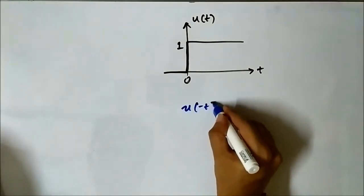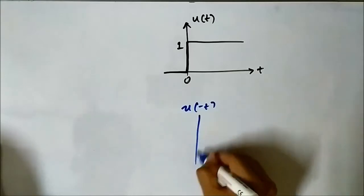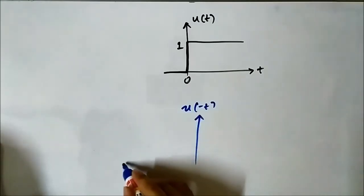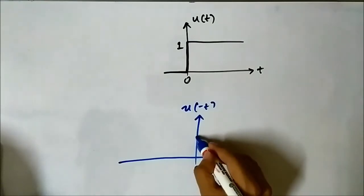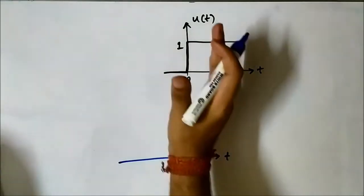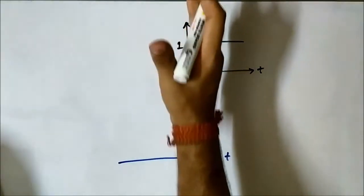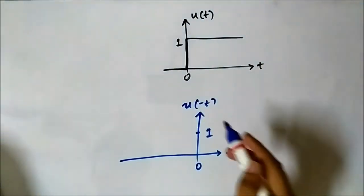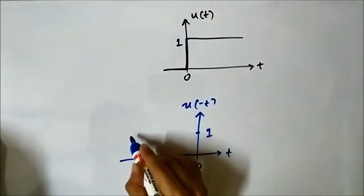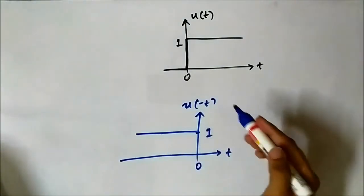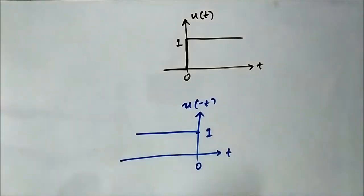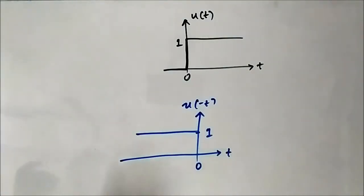The time-reversed signal will be the mirror image about the y-axis, or the amplitude axis — it will be like this. This is the time-reversed unit step signal. Similarly, we can do that for other standard signals. Let us take the ramp signal, for example.